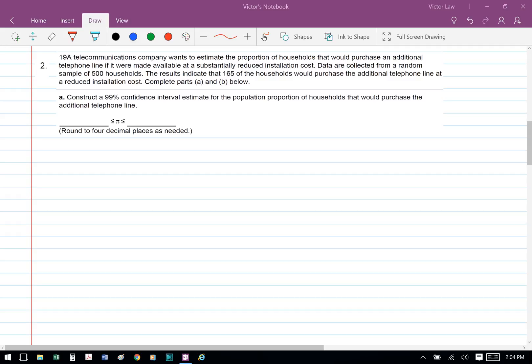A telecommunication company wants to estimate the proportion of households that would purchase an additional telephone line if it were made available at a substantially reduced installation cost. Data are collected from a random sample of 500 households. The results indicate that 165 of the households would purchase the additional telephone line at a reduced installation cost. Complete Part A and B below.